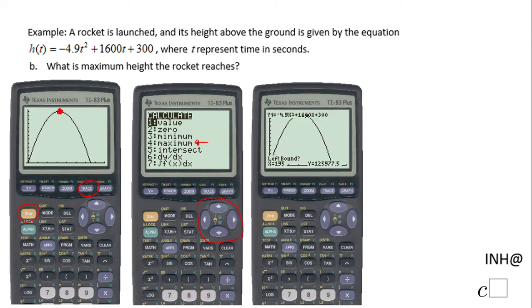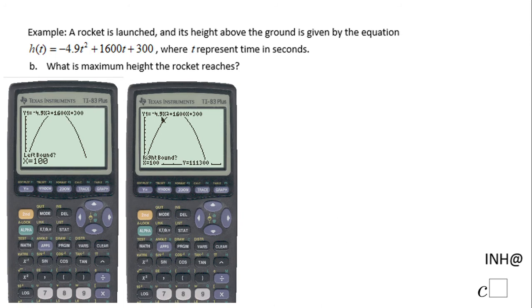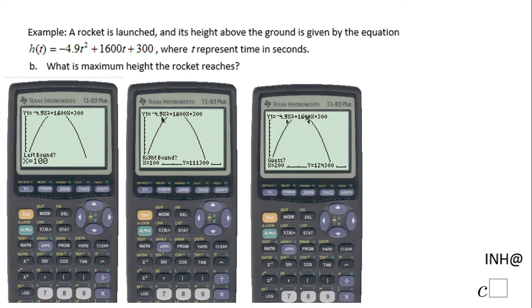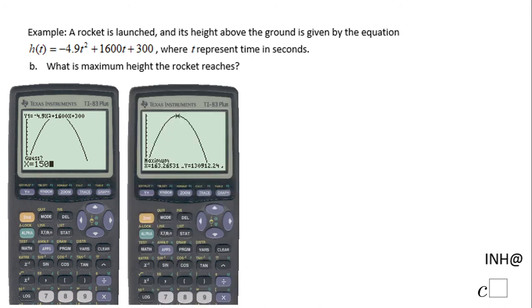Then you're gonna be asked to give a left bound, which I set to 100. You're gonna click enter and gonna be asked to have a right bound. I put 200. Then you're gonna be asked to guess a number. I guess 150, click enter.